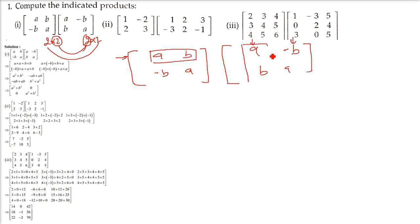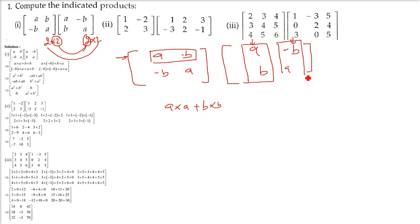The first row and first column: a multiplied by a, then b multiplied by b — add these. Now keep this row until all columns are finished. For the second column: a into minus b, plus b into a — that is b into a.